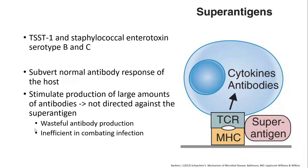Superantigens include toxic shock syndrome toxin and staphylococcal enterotoxin serotypes B and C. Superantigens interact with antigen-presenting cells and T lymphocytes, and they subvert the normal antibody response of the host — they are not specifically targeted by the body's antibodies. They stimulate production of large amounts of antibodies that are wasteful and not directed against the superantigen itself, making the energy used to produce antibodies inefficient in combating the infection.